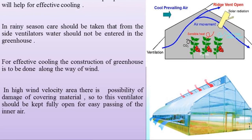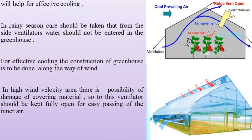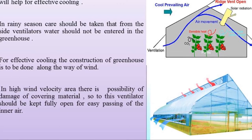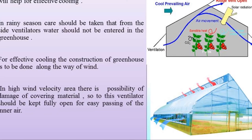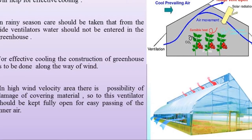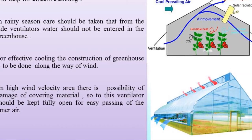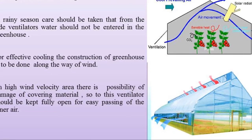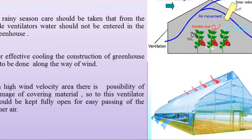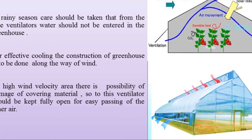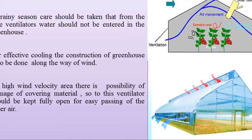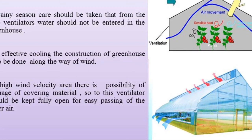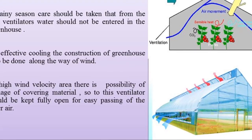In rainy season, care should be taken that water does not enter into the greenhouse through side ventilators. For effective cooling, the construction of the greenhouse should be done along the direction of the wind. However, in high wind velocity areas, there is a possibility of damage to the covering materials. So ventilators should be kept fully open for easy passing of air, meaning air exchange is necessary. This helps to control the temperature naturally inside the polyhouse.